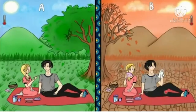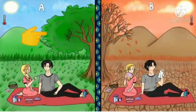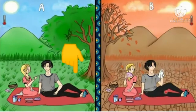Before we start, look at the two pictures. What can you say? Let's spot their differences. Picture A shows abundant plant species, while picture B shows withered plant and fallen leaves. Picture A shows normal heat index, while picture B shows intense heat. Picture A has green grasses, while picture B has extreme drought.